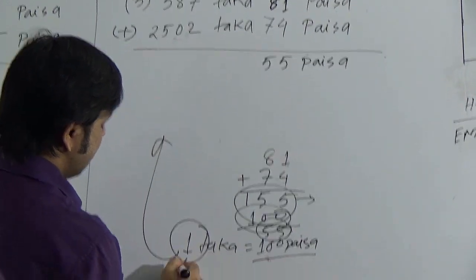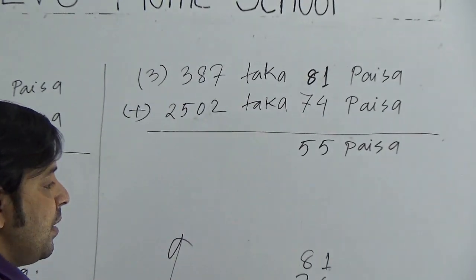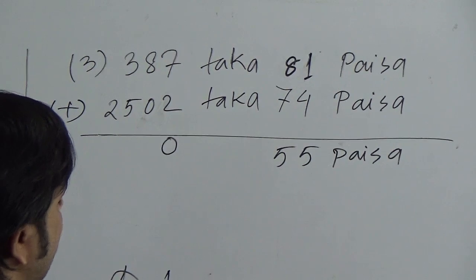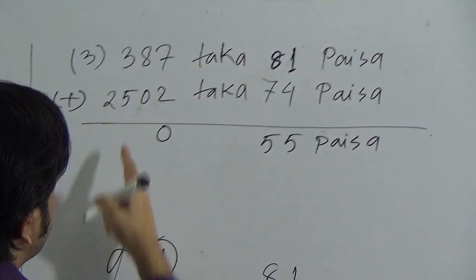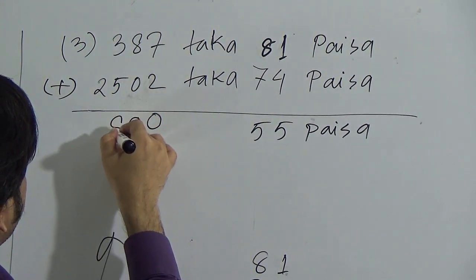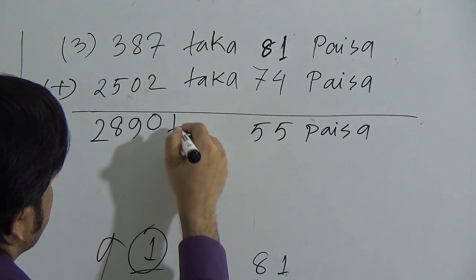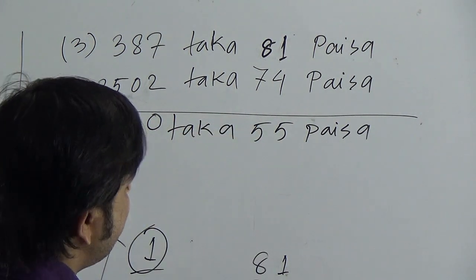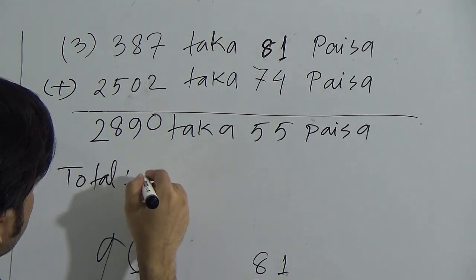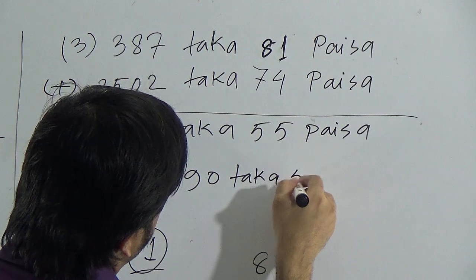And as remaining 1 taka, this we have to add with this taka. At first, add 7 and 2, this will be 9. So add this 1, sum will be 10. So we can write here 0, remaining 1. Now add 8 and 0, there will be 8 and remaining 1 is 9. Now add 5 and 3, this will be 8 and here is 2. So we can say 2809 taka 55 paisa is our required sum. So we can write here total: 2890 taka 55 paisa.